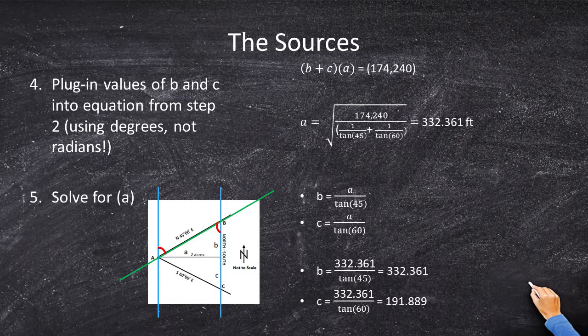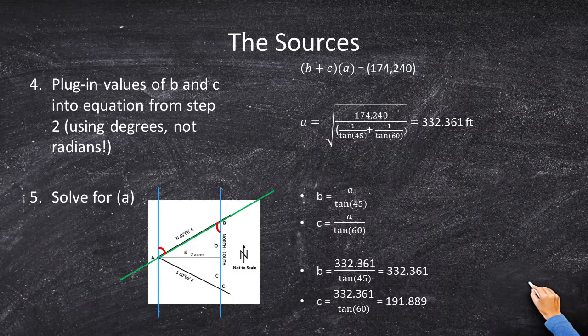But don't stop there. Because you have to take a and plug it in to those two equations from step 2 and step 3. I'm going to plug in a over tan 45 equals the 332.361. And then I'm going to take this 332.361 over tan 60. Why is a and b the same? Because tan 45 is 1. So 332.361 over 1 is the exact same number. What a journey. We have finally found a, b, and c, the lengths of both lines.